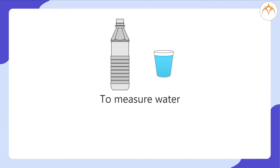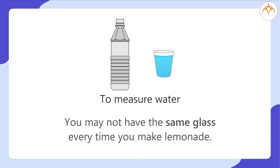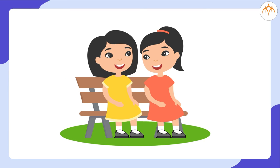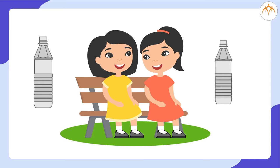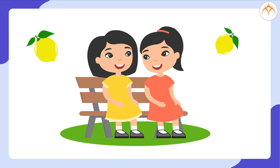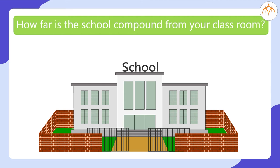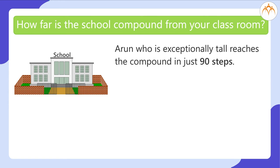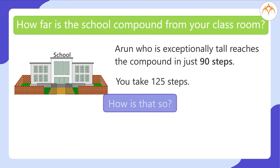We used a bottle or glass to measure water. However, you may not have the same glass every time you make lemonade. If you tell the recipe to a friend, it may not work properly because your glass and their glass, or your bottle and their bottle, will be different. Lemons are also of different sizes. How far is the school compound from your classroom? You may measure by steps — Arun, who is exceptionally tall, reaches the compound in just 90 steps, whereas you take 125 steps. How is that so?